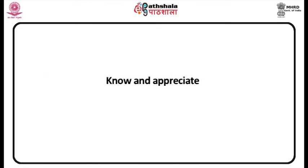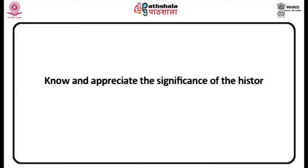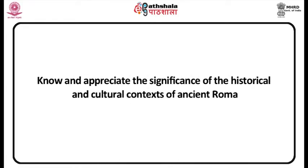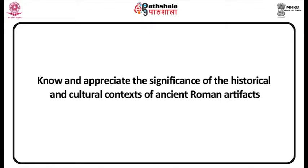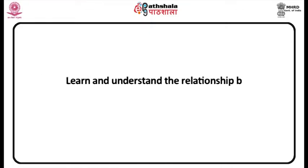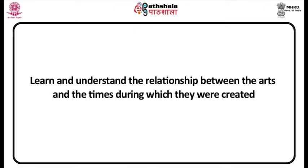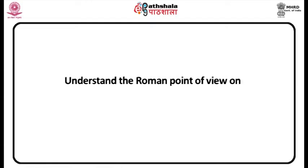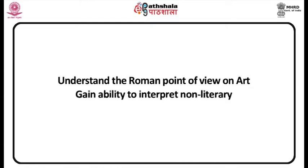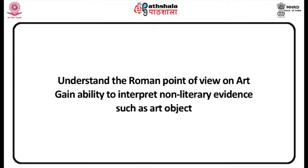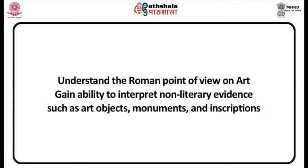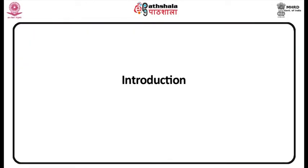Let us understand what our objectives shall be in this chapter: to acquaint ourselves about the significance of Roman art and architecture; to know and appreciate the significance of the historical and cultural contexts of ancient Roman artifacts; to learn and understand the relationship between the arts and the times during which they were created; to understand the Roman point of view on art; and to develop the ability to interpret non-literary evidence such as art objects, monuments and inscriptions.